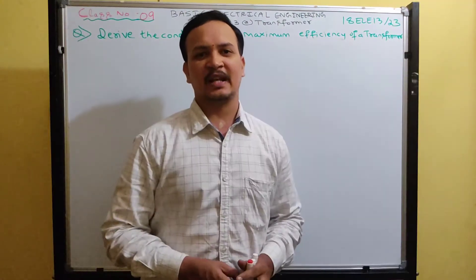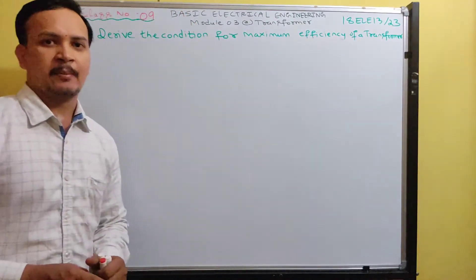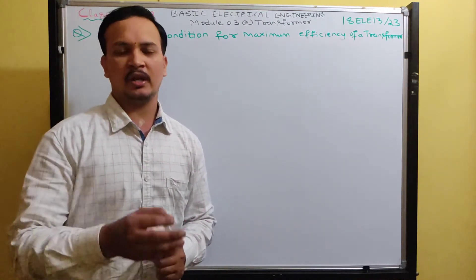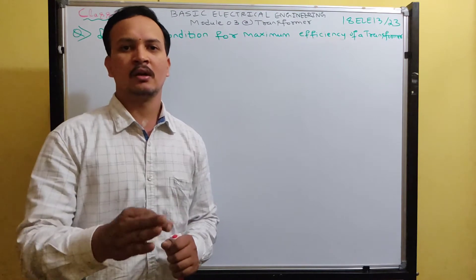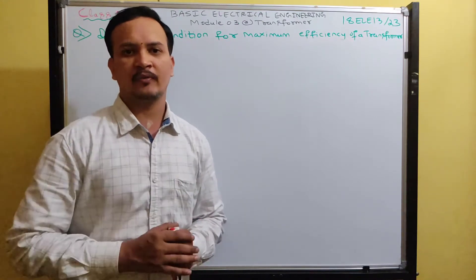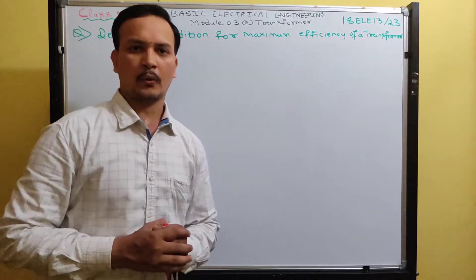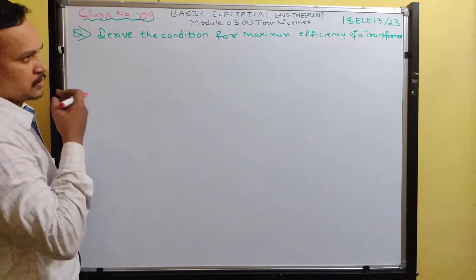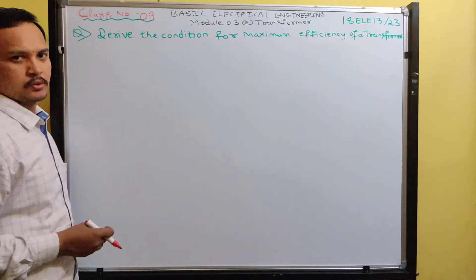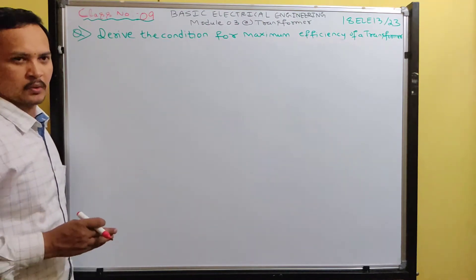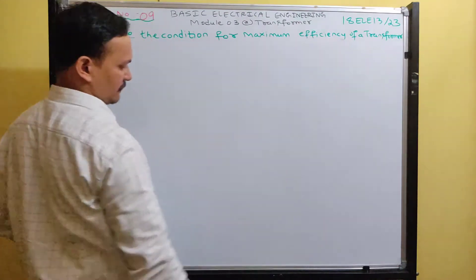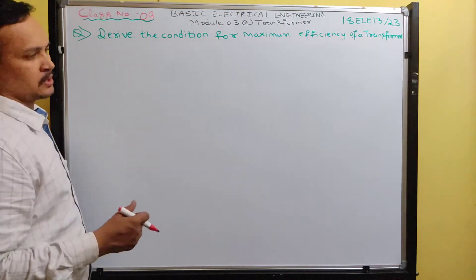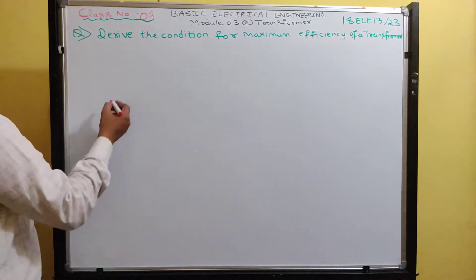Good evening students. Welcome to basic electrical lectures. In this lecture I am going to explain deriving the condition for maximum efficiency of a transformer. This is a very important and most expected question in transformer — either they will ask the derivation of the EMF equation or this derivation. Those who are directly watching this video should watch without any forwarding, because I explained the basics on efficiency in the previous video. If you watch the previous video, this derivation you can understand in one take.